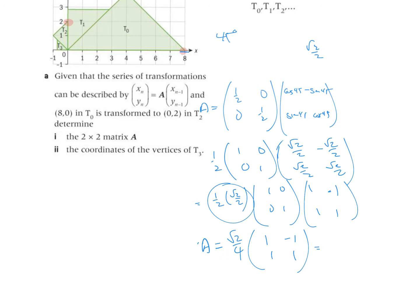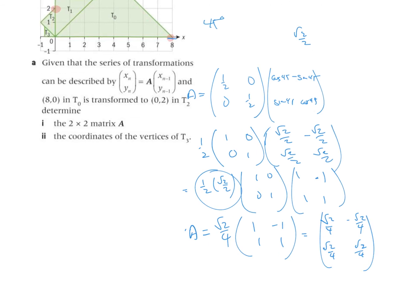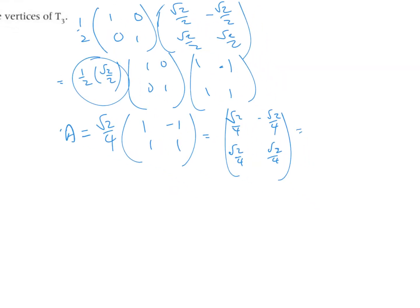If we fully multiply it out, the entries are: √2/4, −√2/4, √2/4, √2/4. As decimals, the calculator gives approximately 0.354, −0.354, 0.354, 0.354. Any of these equivalent versions is 100% correct.